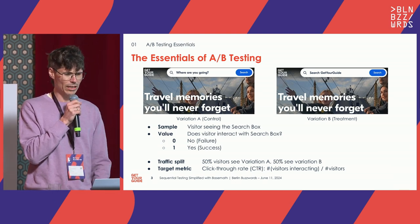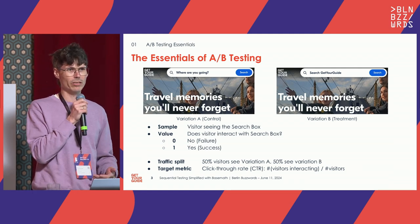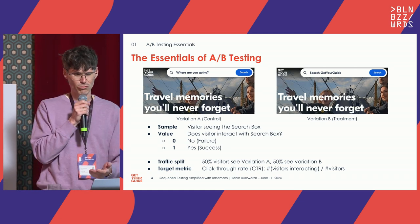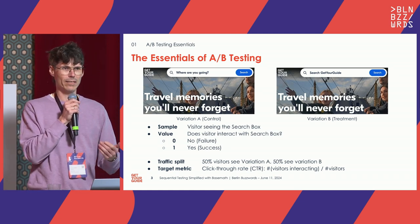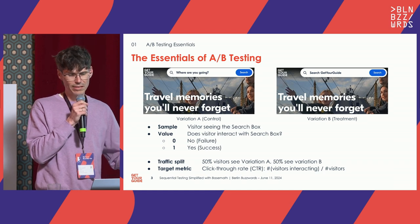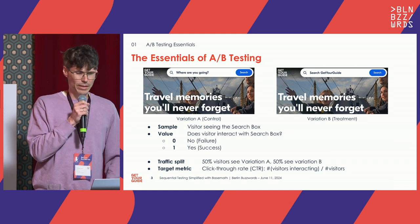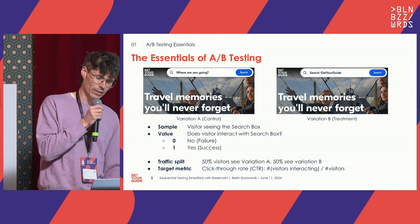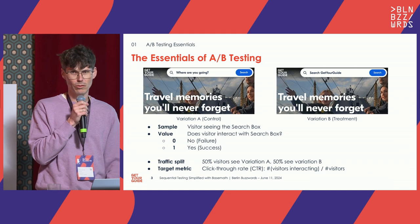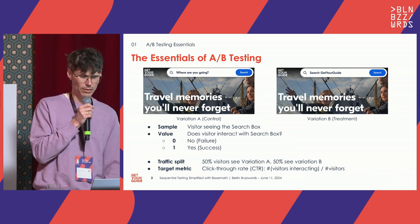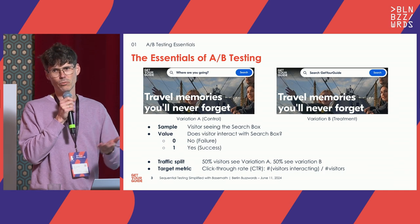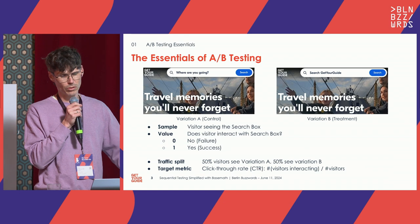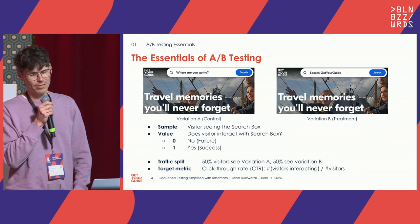You have a control variation and a treatment variation. You have samples — in this case, visitors seeing the search box — and each sample gets a value: binary, either the visitor interacts with the search box (a success, coded as one) or they don't (a failure, coded as zero). In this simple example we do a 50/50 split, so half the visitors are randomly assigned to control and half see the treatment.